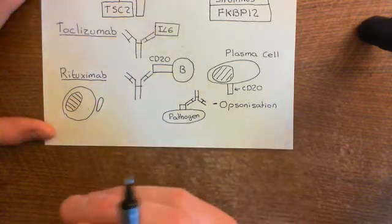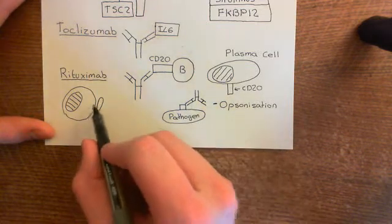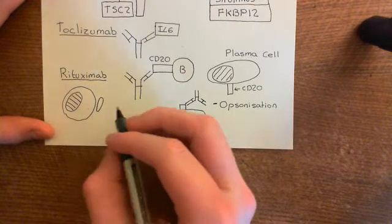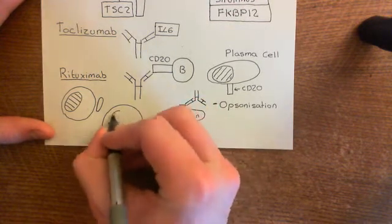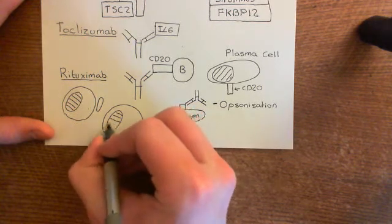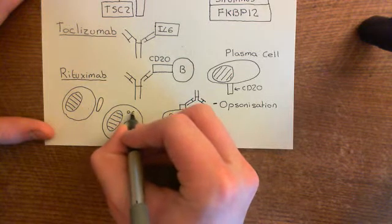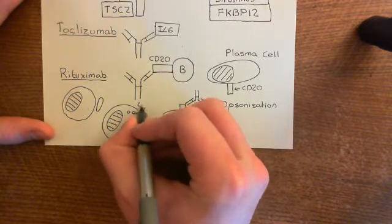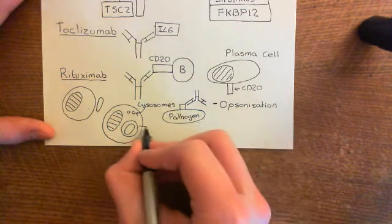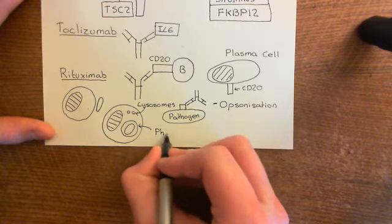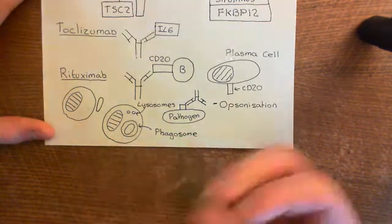The phagocyte will have a receptor for the Fc region of this antibody. The antibody will therefore bind to this receptor, and that will trigger phagocytosis of the pathogen. The phagocyte will engulf the pathogen into a specialized vesicle within the cytoplasm called a phagosome. Then other little vesicles called lysosomes will come and fuse with the phagosome. These lysosomes contain lytic enzymes called lysozymes which will break down the pathogen, releasing their enzymes onto the pathogen so it is broken down.